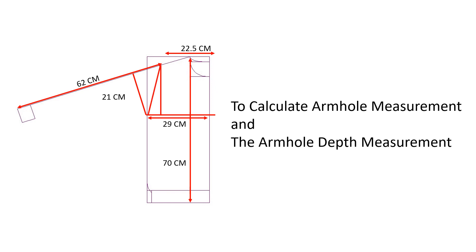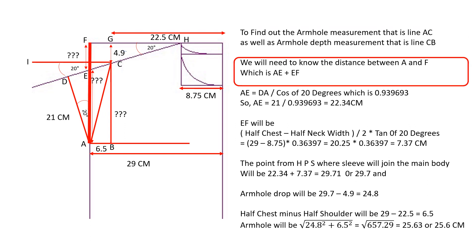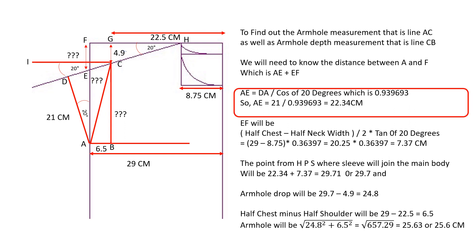To calculate the armhole measurement and armhole depth measurement, we must calculate the measurement between the HPS point and the point where the sleeve will join the main body, represented by AF as per the illustration. This measurement is the sum of line AE and line EF. It is important to note that the angle of the shoulder — between GH and C — the angle of the sleeve slope between IC and D, and the angle between DA and E: all three angles will be 20 degrees as per simple rules of geometry.